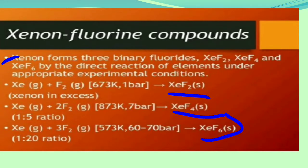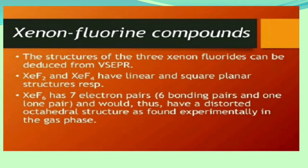For the preparation of XeF6 solid, the required ratio of xenon to fluorine is 1:20. That means one mole of xenon is reacted with three moles of F2 fluorine, requiring a temperature of 573 Kelvin and pressure of 60 to 70 bar. Then only we get XeF6.